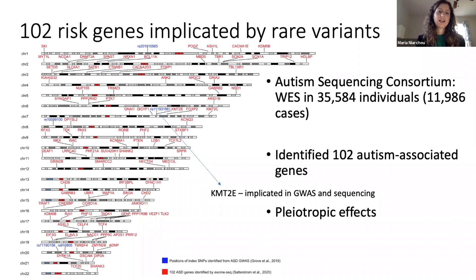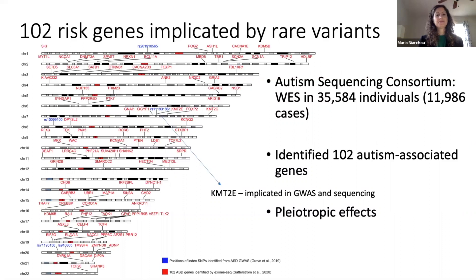The largest whole exome sequencing analysis to date was conducted by the Autism Sequencing Consortium, published in Cell this year. They identified 102 autism-associated genes, which in our review we have mapped to the autosomal chromosomes in red. In blue are the five SNP loci identified in the largest genome-wide association study by Grove and colleagues. Notably, KMT2E was implicated in both the largest GWAS and exome sequencing analyses. It is hypothesized that common genetic variation in or near the genes associated with autism influences autism risk, although current sample sizes lack the power to detect the convergence of the two.